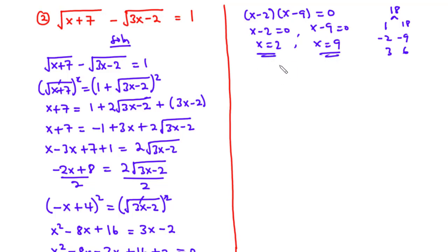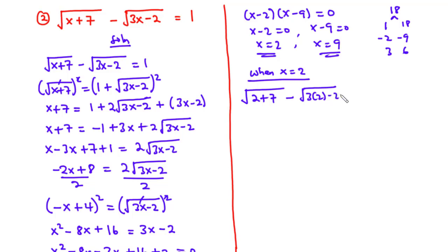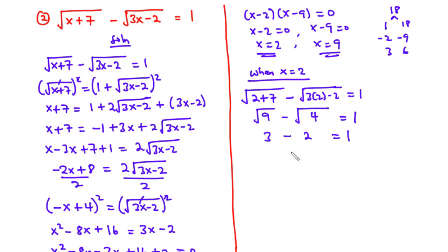Now we need to test if both solutions satisfy the original equation. When x equals 2, substituting into the original equation gives: square root of 2 plus 7 minus square root of 3 times 2 minus 2 equals 1. That is square root of 9 minus square root of 4, which is 3 minus 2, equals 1. Since 1 equals 1, x equals 2 is a valid solution.